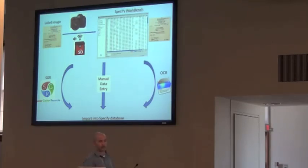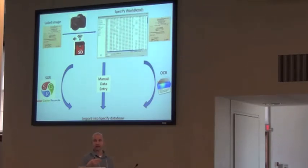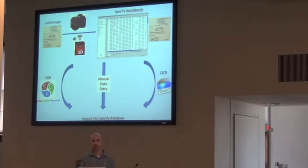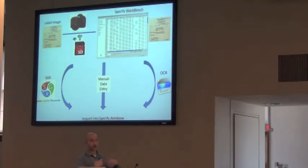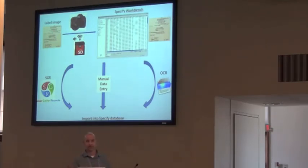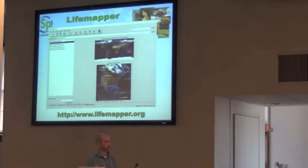There are three obvious workflows from that setup: first, manually entering the data by hand; second, using an OCR system to extract label text and place it into a block field, then parse it into the relevant database fields; and third, SGR — which uses existing duplicate data already catalogued by other institutions to catalog your own duplicate of that specimen. SGR is mainly relevant for certain collections at the moment, so we won't go into detail.